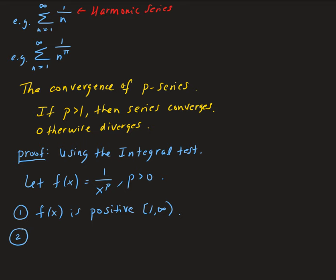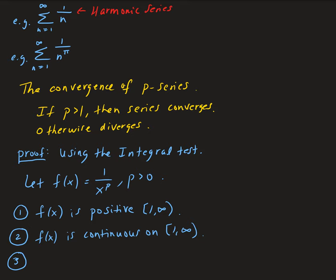The second condition is that the function must be continuous. Since x is on the interval from 1 to infinity, we are never dividing by 0, so there is no vertical asymptote. This shows that the function is continuous on this interval. The third condition is that we need to show the function is decreasing on this interval.